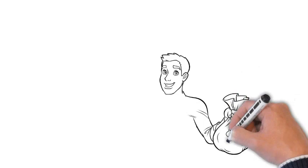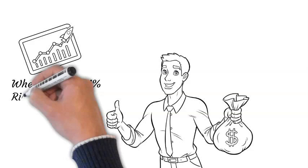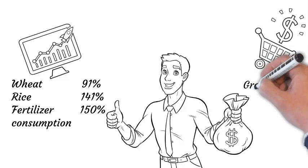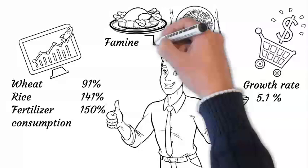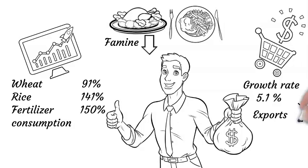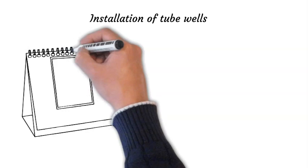The output of major crops from 1960 to 1970 increased substantially: wheat production increased by 91 percent, rice by 141 percent, and fertilizer consumption by 150 percent. The growth rate in the 1960s was 5.1 percent, the second highest in Pakistan's history. This era helped Pakistan feed its population, reduced the chances of famine, allowed export of surplus wheat, and saw tube wells grow from a few hundred in 1960 to 156,000 in 1975.